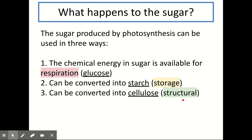So what happens to sugar? The sugar produced by photosynthesis can be used in three different ways. The chemical energy stored in the sugar can be used for respiration — we know that respiration uses glucose. The sugar could also be converted into starch, which is a storage carbohydrate — that's what plants store their sugar as. Sugar can also be converted into cellulose, which is a structural carbohydrate — the component that makes up plant cell walls. Essentially, carbohydrates — glucose, starch, or cellulose — can be used for three different functions: respiration, storage, and structure, and you need to know which one goes with which.